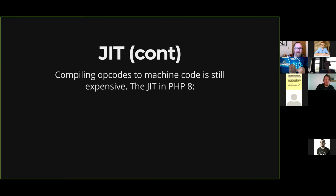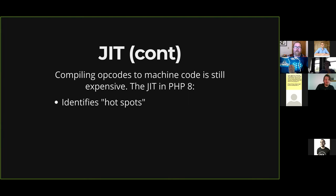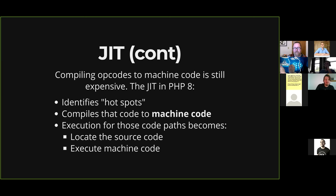Compiling opcodes to machine code is still expensive. So the JIT in PHP 8 identifies hotspots — code that's CPU-intensive or executed repeatedly — and compiles that to machine code. Execution for those code paths becomes: locate the source code, execute the machine code, done. We've just skipped around six steps.